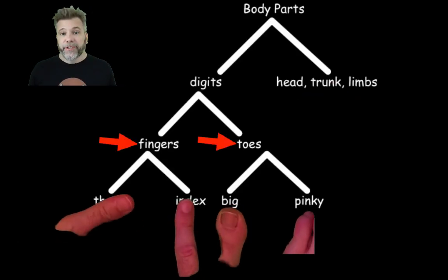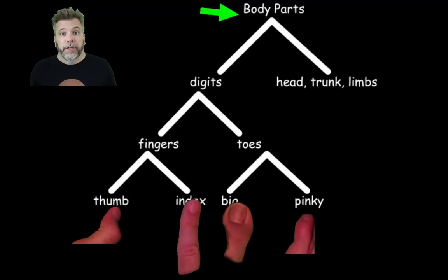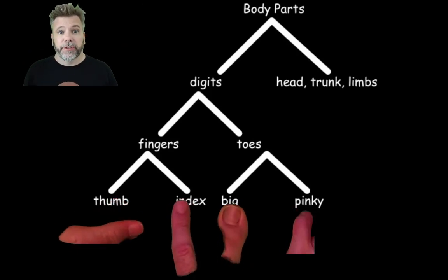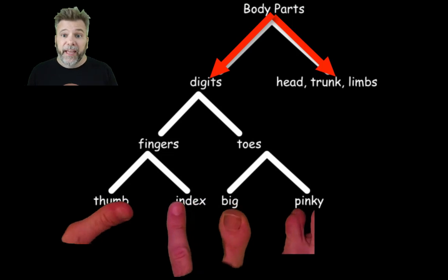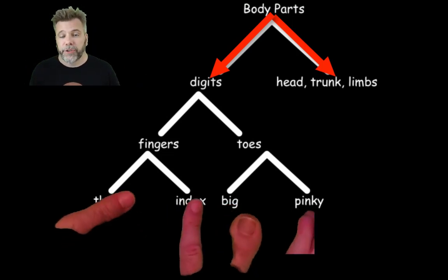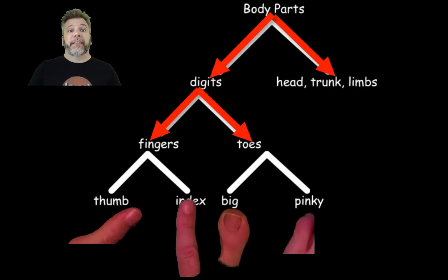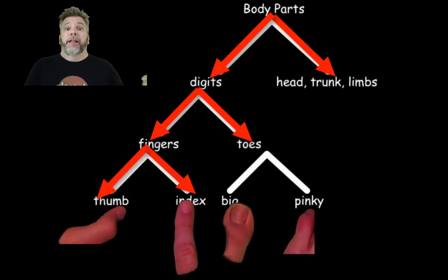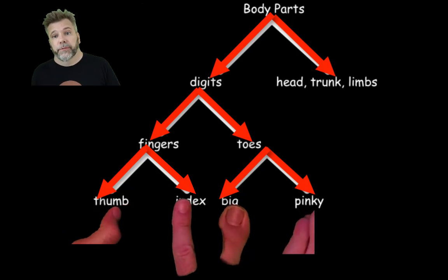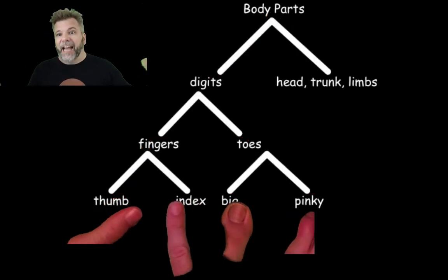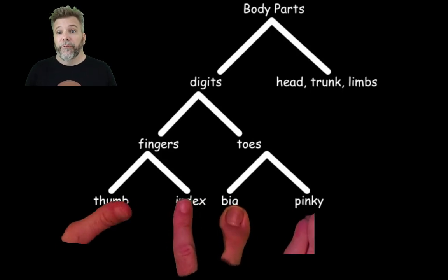Both fingers and toes are types of digits, and digits are a type of body part — so we can fit this in a nice hierarchical structure. Starting with body parts overall, we can break them down into digits, head, trunk, arm, leg, and so on. Digits can be broken into fingers and toes, and those can be broken down further into thumbs and index fingers, or big toes and little toes. All thumbs are fingers, but not all fingers are thumbs — that comes from this basic hierarchical structure.